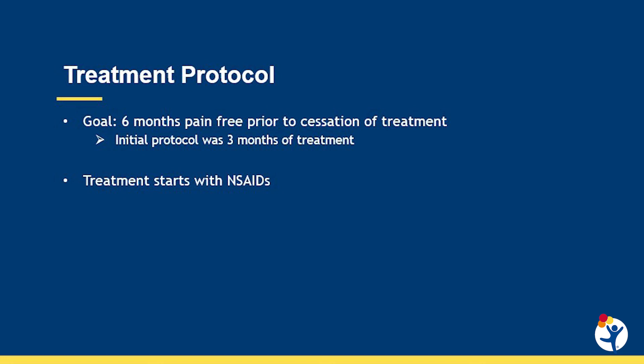If the naproxen doesn't work and we move on to other treatments, we don't start that six-month clock until we get the patient to be pain-free. Initially when we started treating CRMO, we'd only treat for three months at a time, but we found that our recurrence rate was very high. We have decreased our recurrence rate by going to six months of treatment.